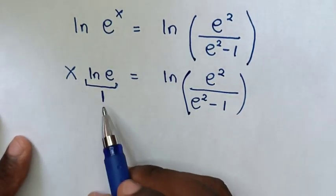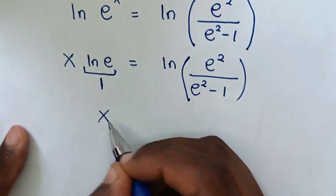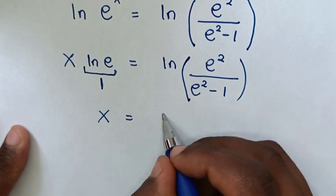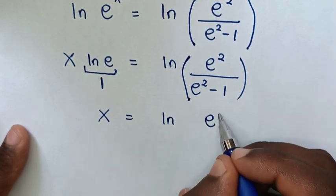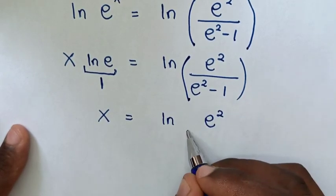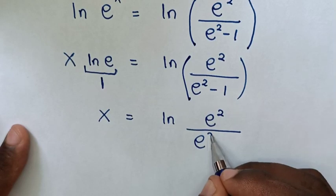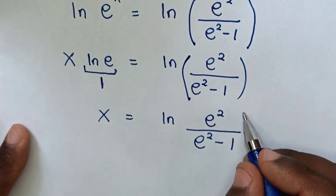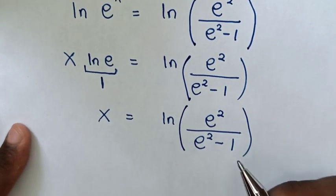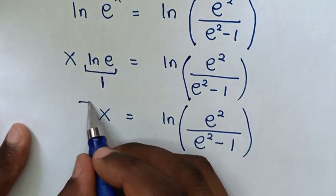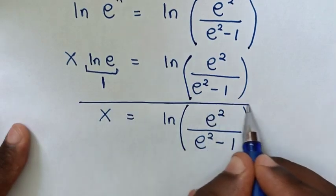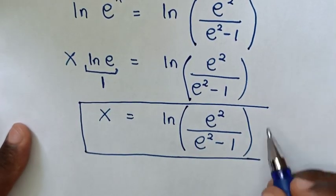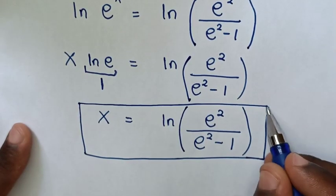Since ln e power of x equals x, the final answer is x equals ln of e power of 2 over e power of 2 minus 1. This is our equation. Thank you for watching.